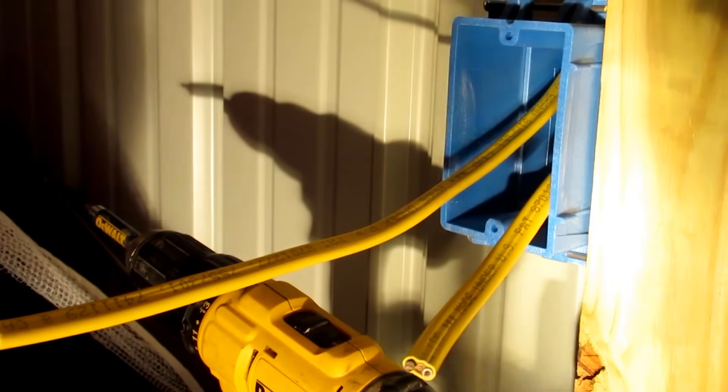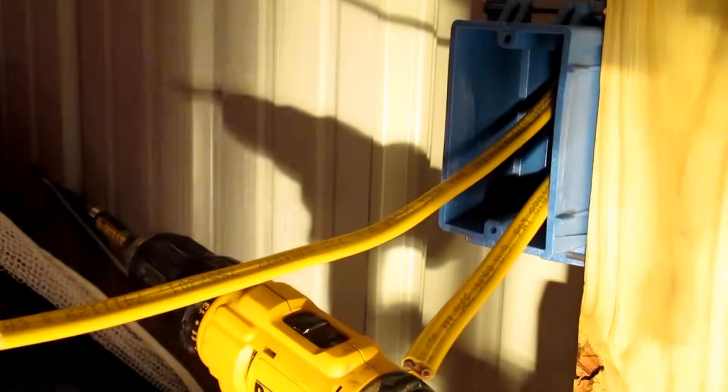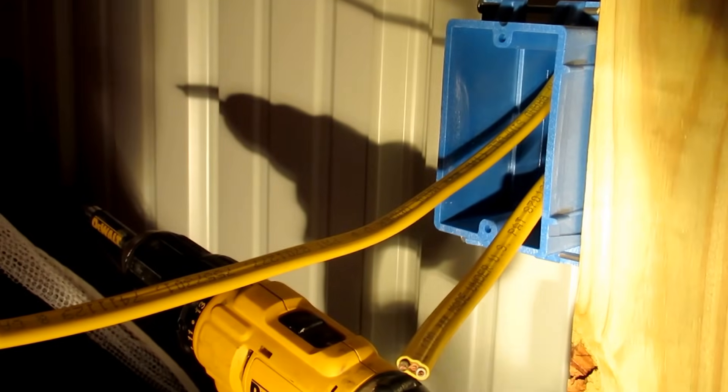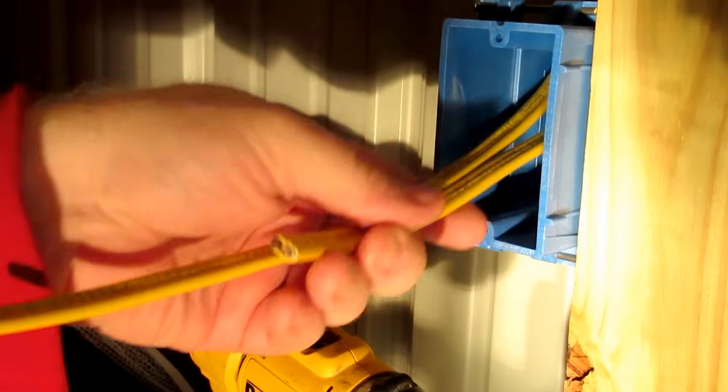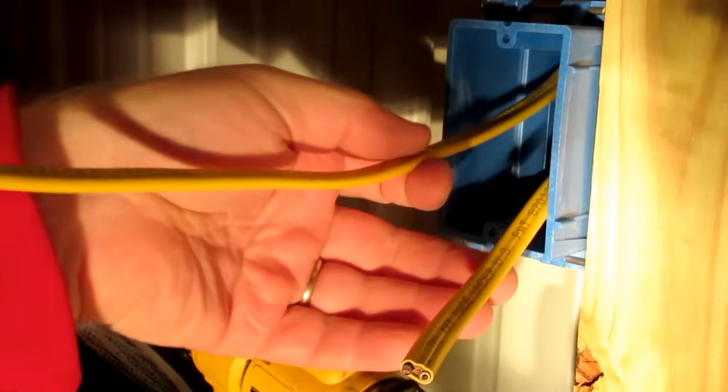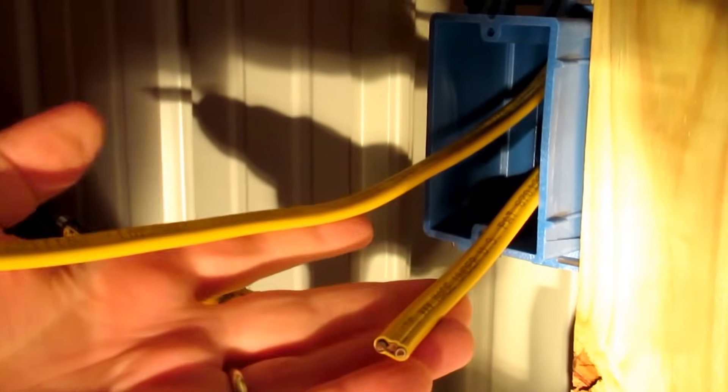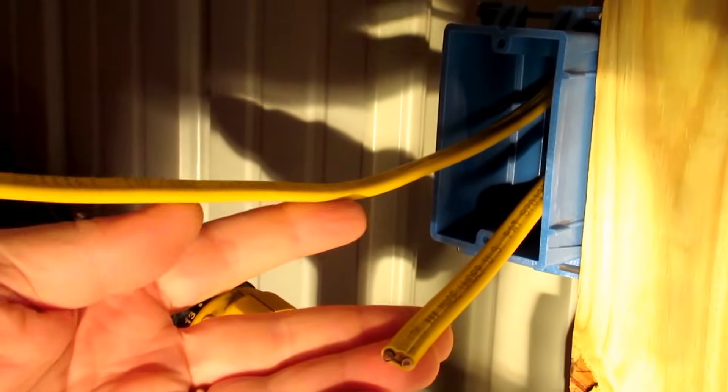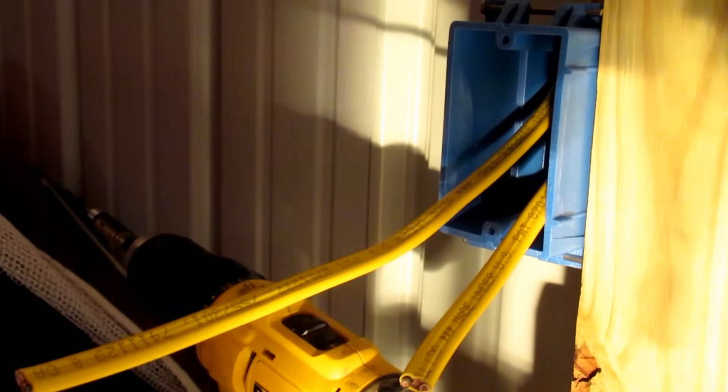I'm actually using my shop light to provide light right now. This is going to be the first light circuit in this shop. What we have here is our box, we have our line coming from our breaker as well as our line going up to the lights. And what I'm going to do now is basically strip the insulation off of the Romex.